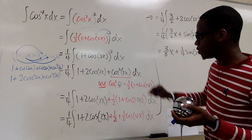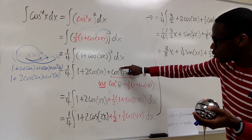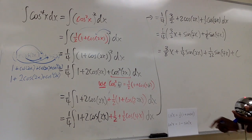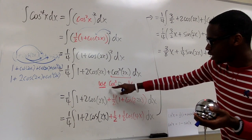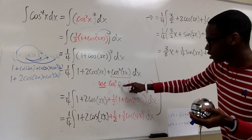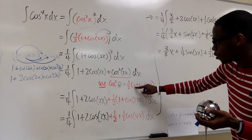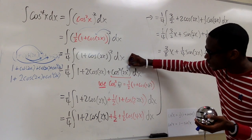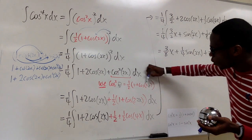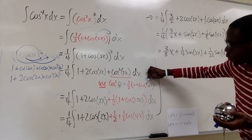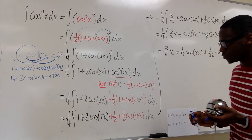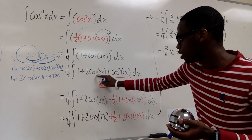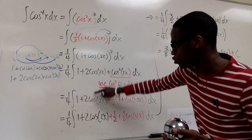We have to use the power reduction formula again. We must be careful: in the generic form cosine squared(θ) = ½(1 + cos(2θ)). Our input here is 2x, so multiplying 2 by 2x gives us 4x. So we have 1 + 2·cosine(2x), and this portion just drops down.